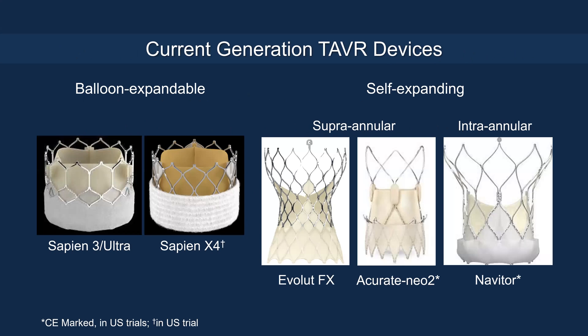Currently, there are a number of devices commercially available in both the US and Europe. In the balloon-expandable platform, there's the Sapien 3 Ultra and Sapien X4, currently under clinical trial. In the self-expanding platform, there's a supra-annular valve — the Evolut FX and NEO2, where the NEO2 is currently under clinical investigation in the United States. For the intra-annular self-expanding valve, there's the Abbott Navitor valve, available commercially in Europe and currently in trial in the US.